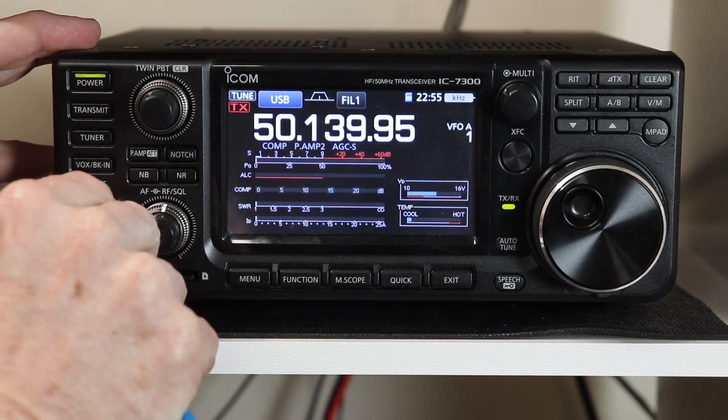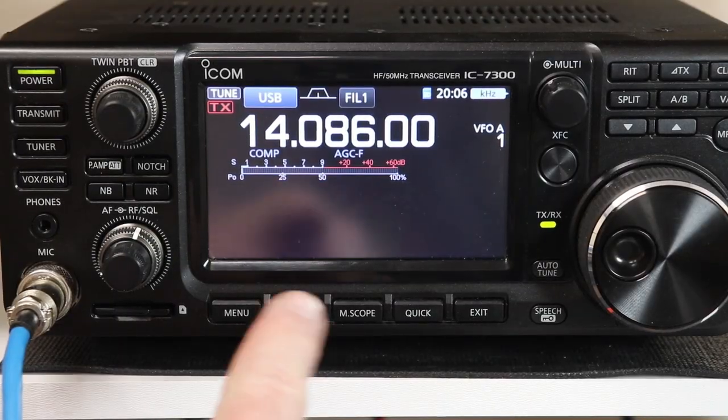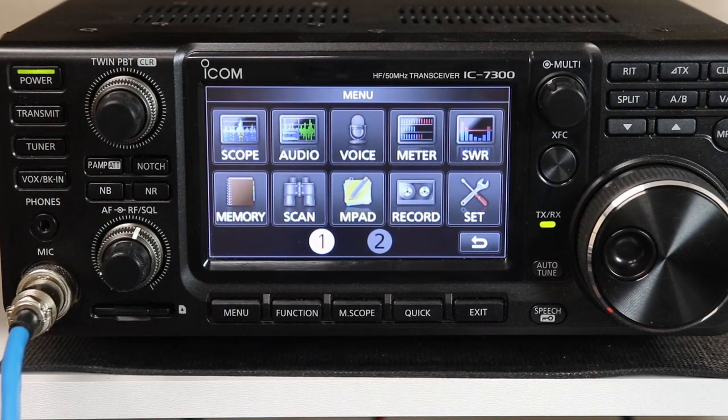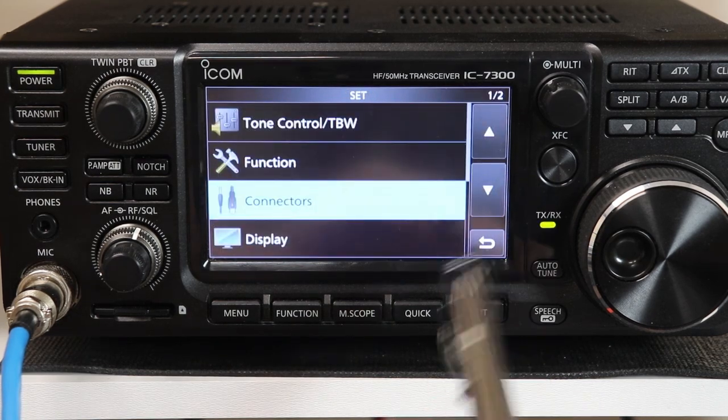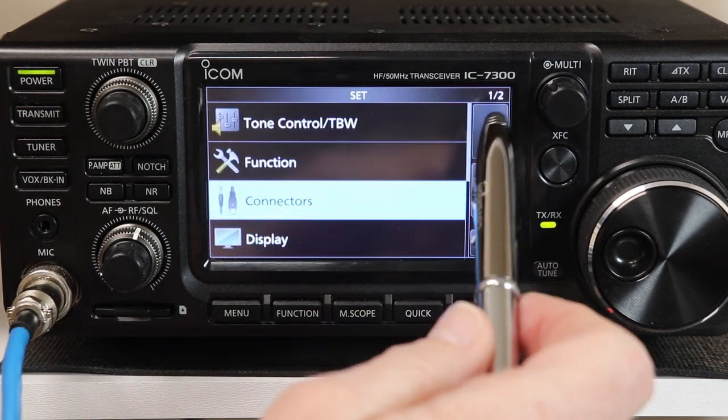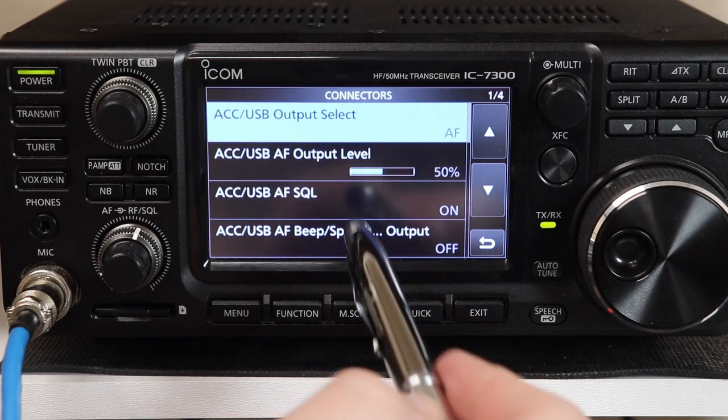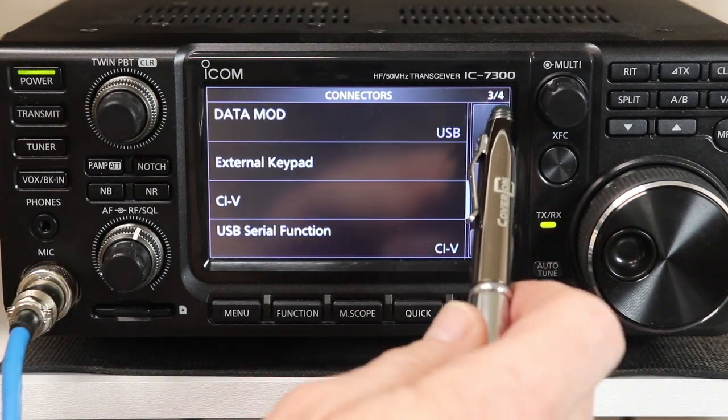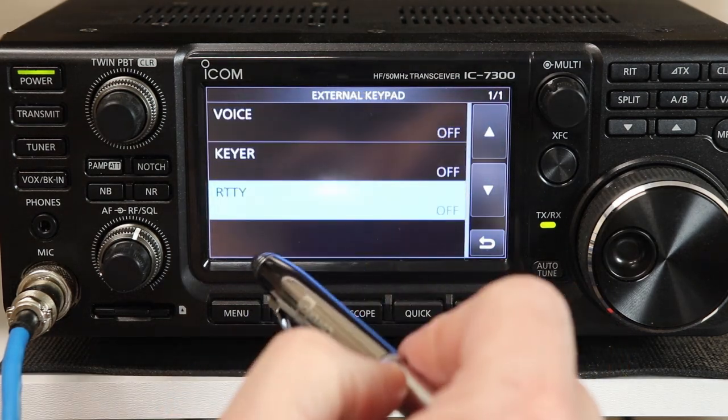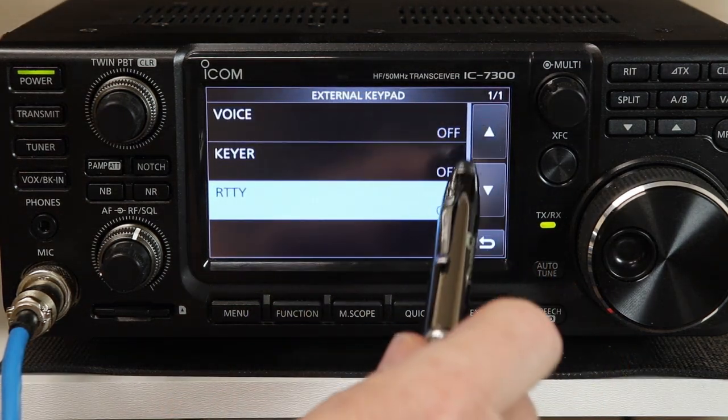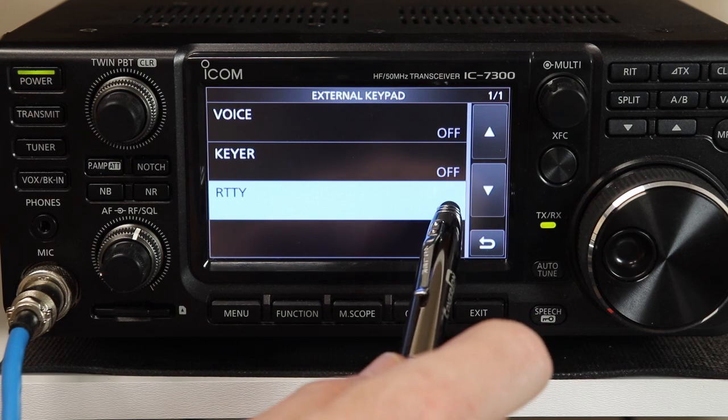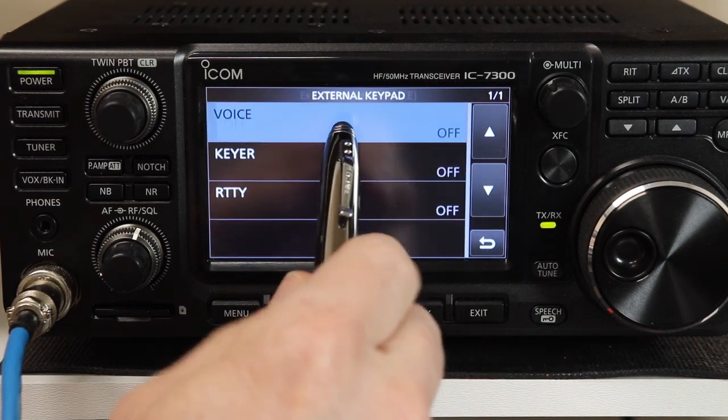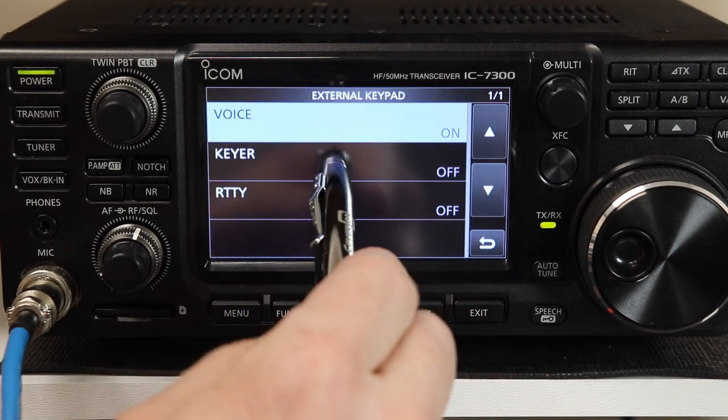Now if we were to just do this and not make any changes, this isn't going to work. We need to go into the menu, go to the settings, and then we're going to go to the connectors option. And on the third page down on connectors, there's a selection that says external keypad. You'll see all of these are off. By default they come off.